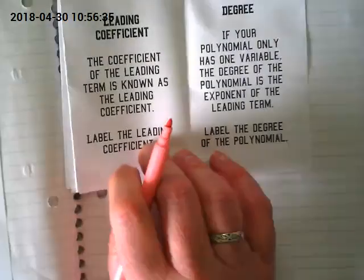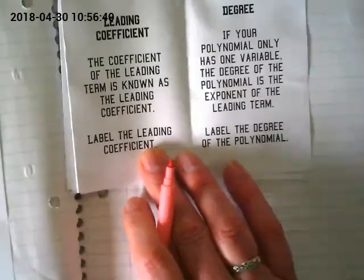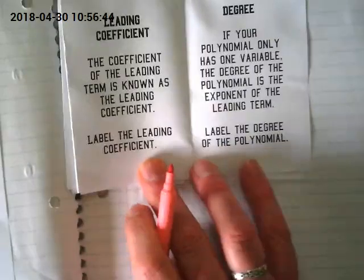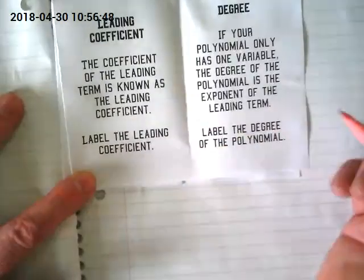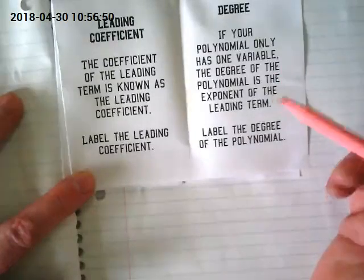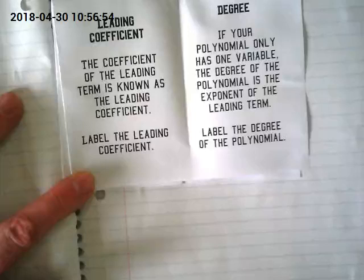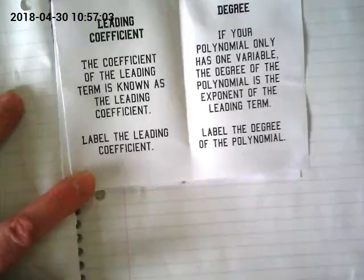Last two pages. Leading coefficient. The coefficient of the leading term is known as the leading coefficient. We'll be labeling the leading coefficient. And finally, the degree. If your polynomial only has one variable, the degree of the polynomial is the exponent of the leading term. So, let's make this make sense by doing some examples.